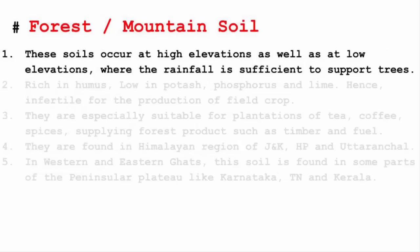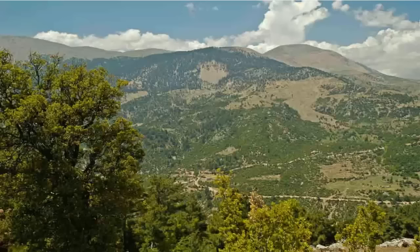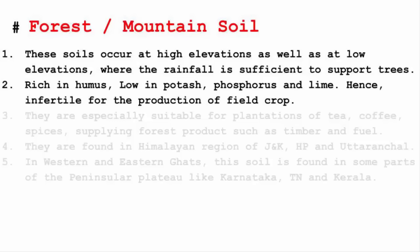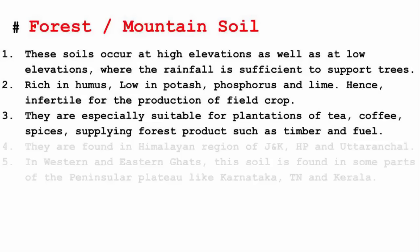The last type of soil is forest or mountain soil. As the name suggests, it occurs at high and low elevations where rainfall is sufficient to support trees. This soil is rich in humus but low in potash, phosphorus and lime, making it infertile for field crops. It is especially suitable for plantations of tea, coffee, spices, and for supplying forest products such as timber and fuel.